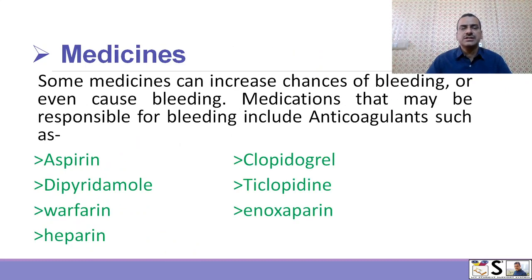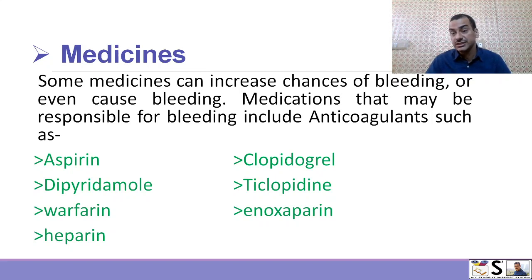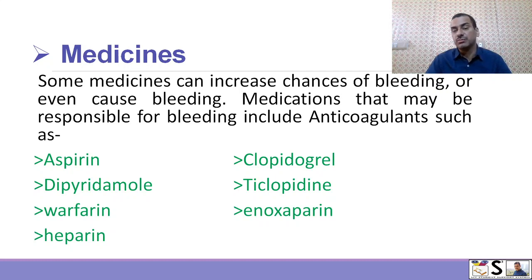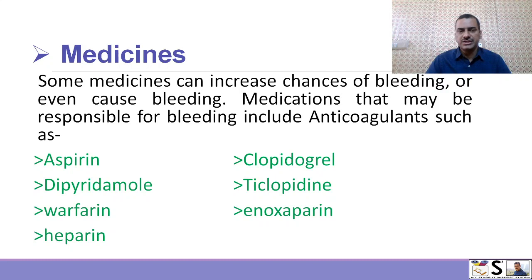The third cause is use of some medicines. Some medicines can increase the chances of bleeding or even cause heavy bleeding sometimes. Medications that may be responsible for bleeding include anticoagulants such as aspirin, clopidogrel, dipyridamole, ticlopidine, warfarin, enoxaparin, and heparin.